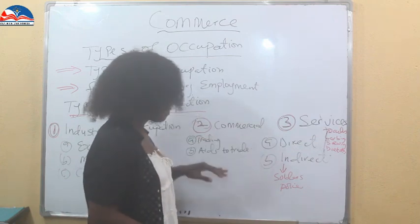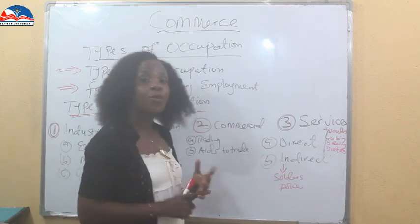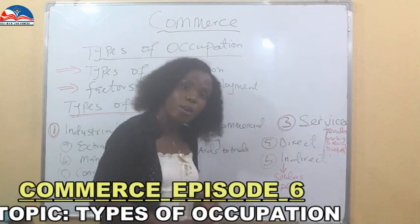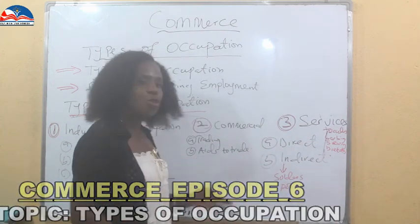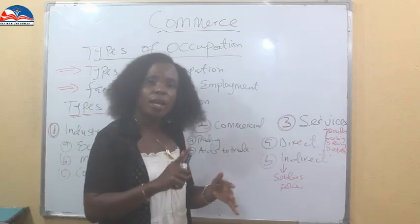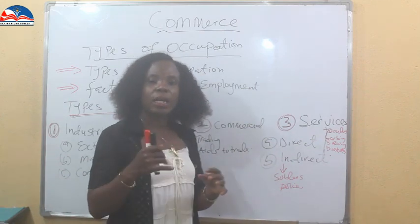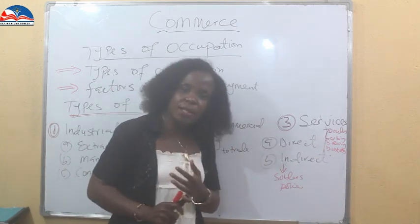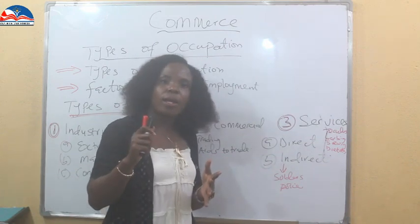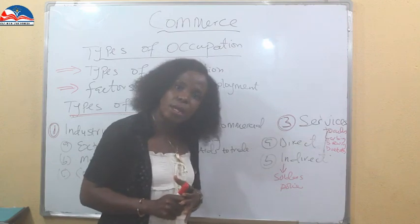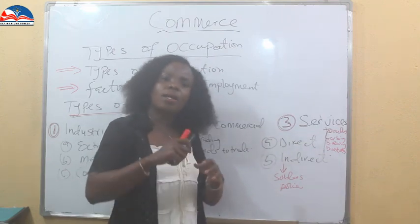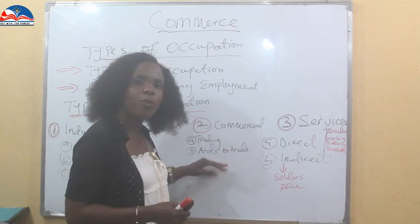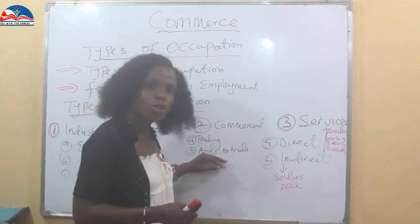Many persons out there are traders. Then we have those who work in the aids to trade sector. If you've watched our business studies or commerce class, we have taught these. Aids to trade include warehousing, communication, advertising, tourism, banking, and other areas — about eight of them. You can be gainfully employed in the banking sector, communication sector, advertising sector, tourist areas, warehousing, and even e-commerce. These are aids to trade, and that's another type of occupation we can get employed in.